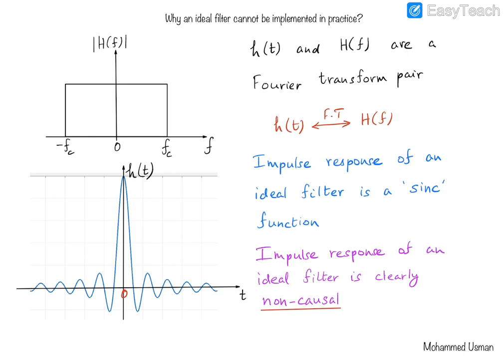What we observe is that the impulse response and the frequency response are a Fourier transform pair. Since the impulse response of an ideal filter has the shape of a sinc function, we clearly notice that this impulse response is non-causal. Causality is a condition that is required for any system to be implemented practically, and the impulse response in this case is non-causal. Let us see what causality means and how it impedes the implementation of a system whose impulse response is not causal.